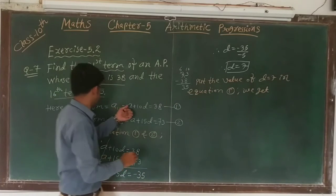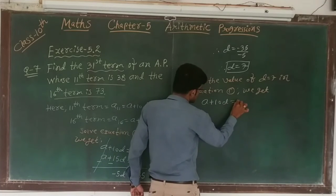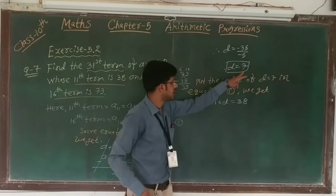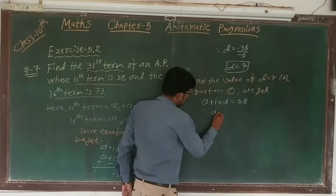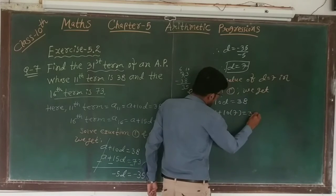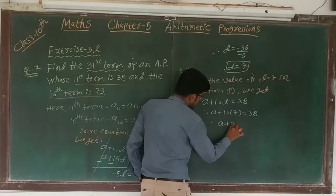Now we get a plus 10d is equal to 38, so a plus 10 times 7 is equal to 38. Therefore a plus 70 is equal to 38.